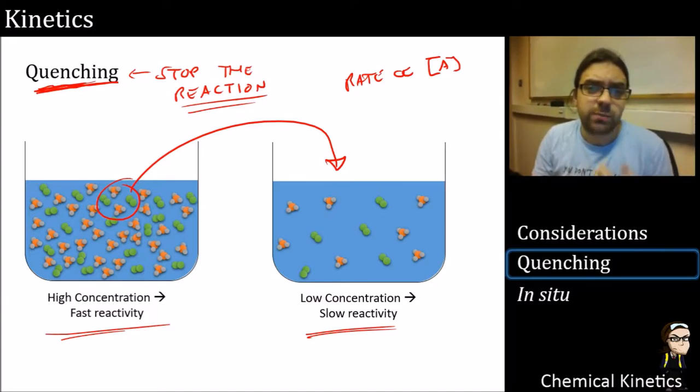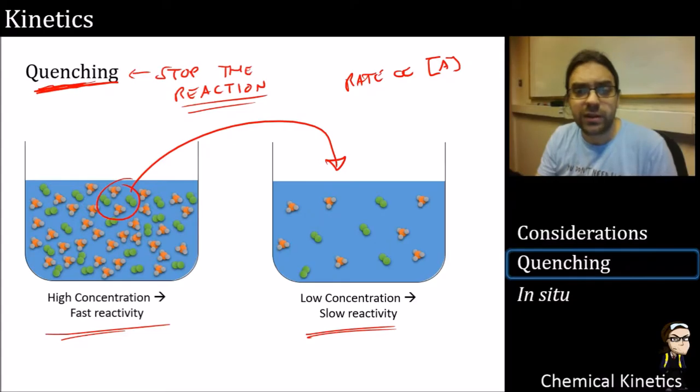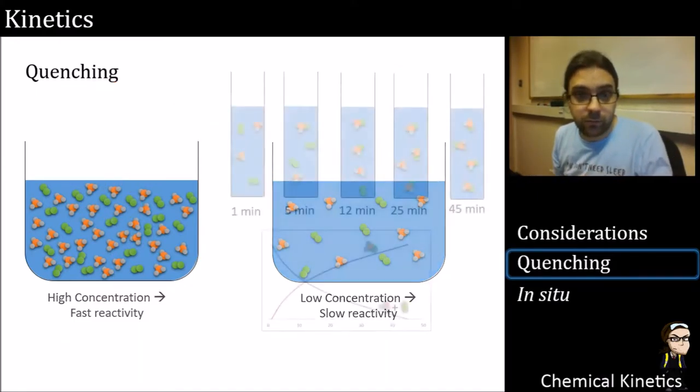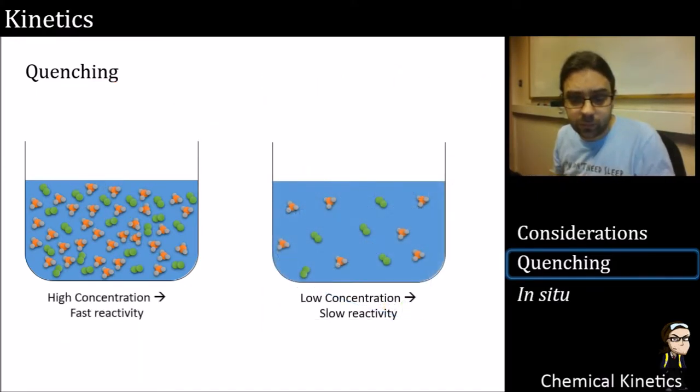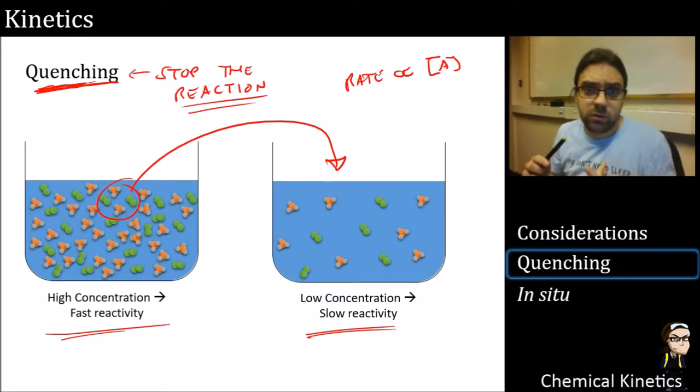We can also quench by adding something to stop the reaction. So if something is very reactive, we can add something that will react even faster, just to mop it all up and take it out. We can also quench by cooling it down as well. So if we can chill it down to stop the reaction, we can dilute it to stop the reaction, or we can add something in there just to physically mop up anything that's reactive. As long as we can do that, we can quench it.